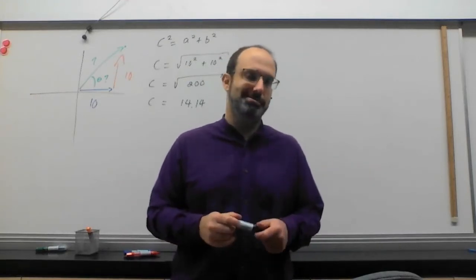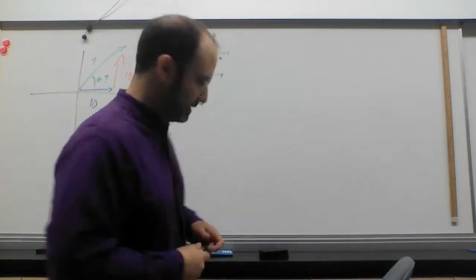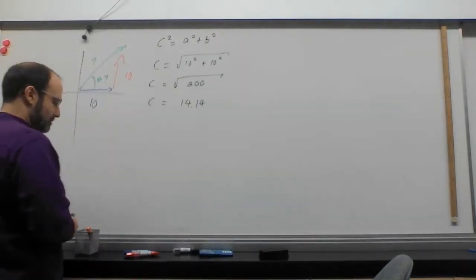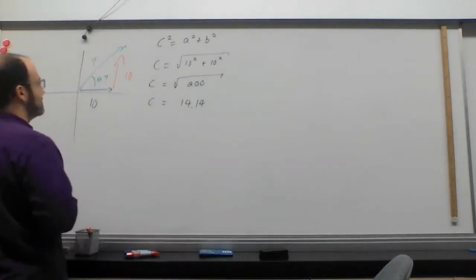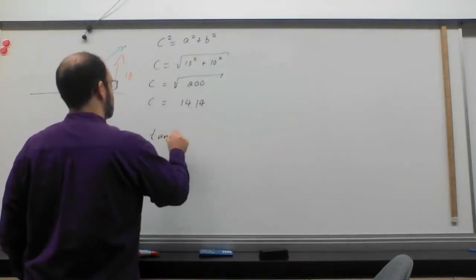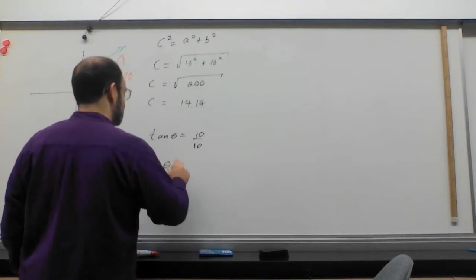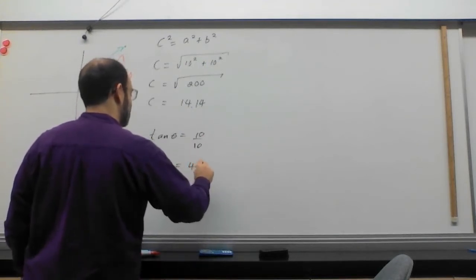14.14. So we're done, right? No. We still need the angle. Cursed angle. How do we get the angle again? Trig. So for trigonometry, in this case, we're going to use tan. Tan theta equals 10 over 10. That's obviously going to be 1. In this case, the angle is going to be 45 degrees.